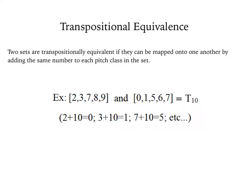Transpositional equivalents. In order to determine if two pitch class sets are transpositionally equivalent, we need to start with two sets that have the same number of pitch classes. For instance, we have two sets here with five pitch classes each. Two sets are transpositionally equivalent if they can be mapped onto one another by adding the same number to each pitch in the set.